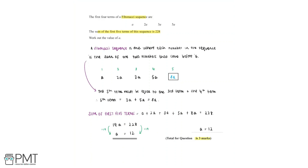This question is worth three marks. We get the first mark for finding that the fifth term is equal to 8a. We get the second mark for setting up the equation a plus 2a plus 3a plus 5a plus 8a equals 228. And we get the third and final mark for simplifying and rearranging to find that a is equal to 12, achieving the full three marks.